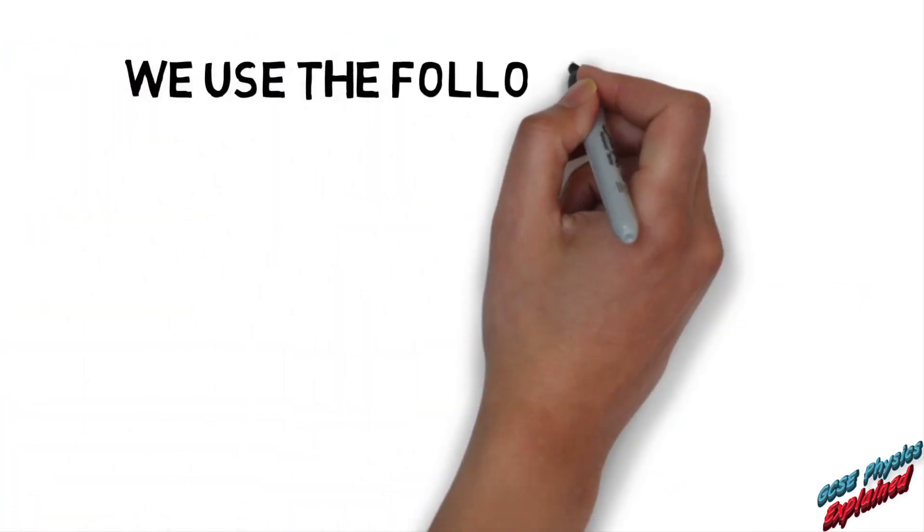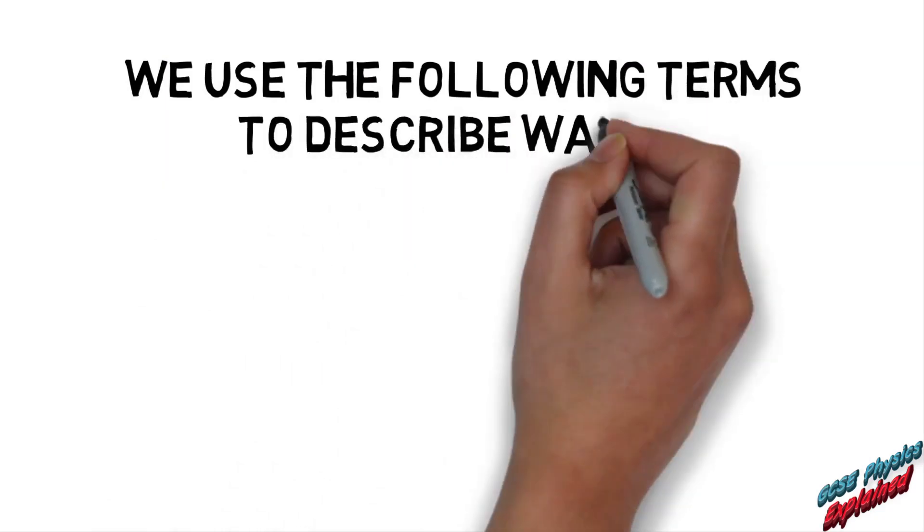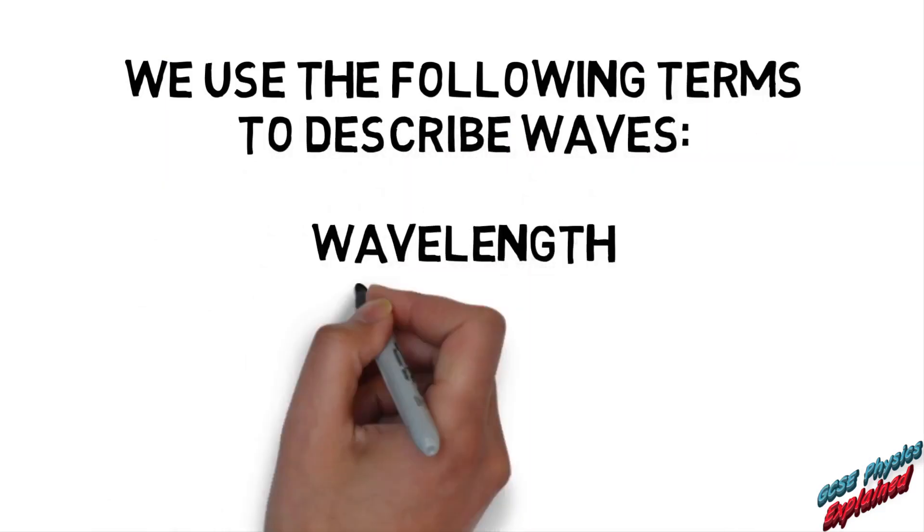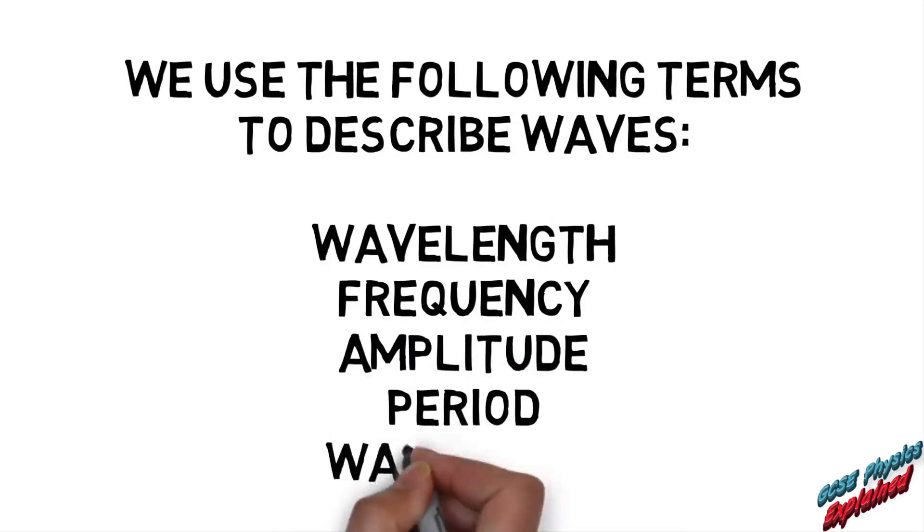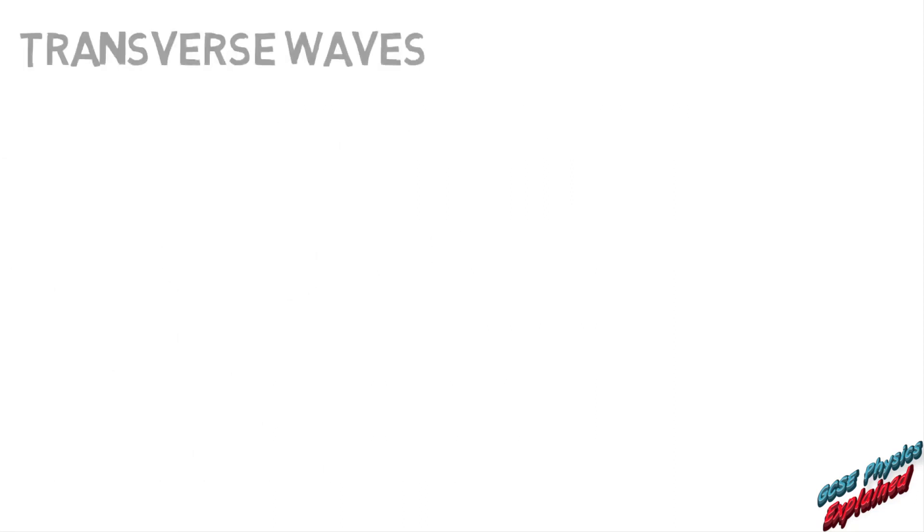We use the following terms to describe waves: wavelength, frequency, amplitude, period, wave speed. Let's consider those terms when describing transverse waves.